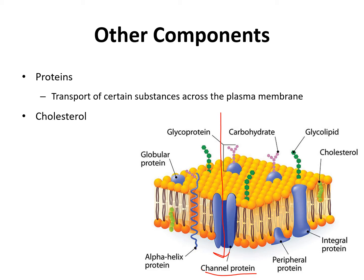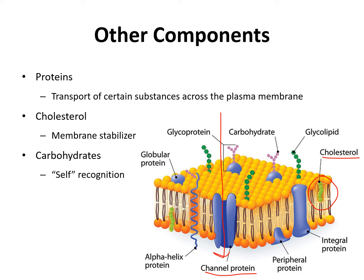Another molecule embedded in the cell membrane is cholesterol, which serves as a membrane stabilizer — it helps stabilize the shape of the membrane, and this is especially important in animal cells. The last type of molecule are carbohydrates, which are sugar molecules involved in self-recognition. This is how cells identify cells that belong to the individual or foreign cells. Glycoproteins and glycolipids — a glycolipid being a sugar bound to a lipid molecule — are used in identification.